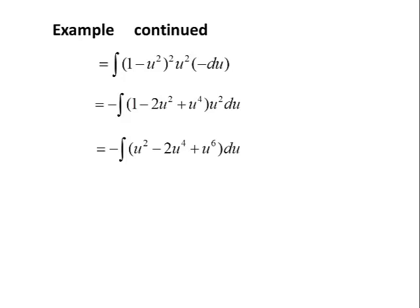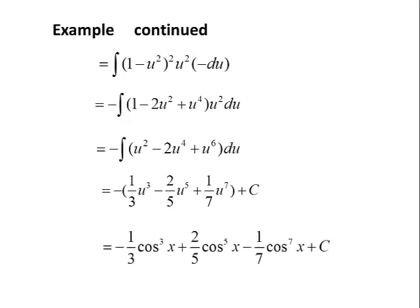This is a very friendly integral to attack with the power rule for integration. Using the power rule, we get the antiderivative: negative (one-third u cubed minus two-fifths u to the fifth plus one-seventh u to the seventh) plus C. Back-substituting u equals cosine x gives us negative one-third cosine cubed x plus two-fifths cosine to the fifth x minus one-seventh cosine to the seventh x plus C.